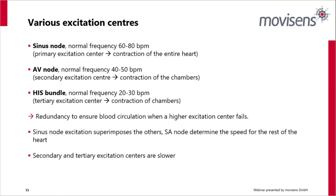There are various excitation centers within the heart. The sinus node is the primary excitation center with a normal frequency of 60 to 80 beats per minute, focused on contraction of the entire heart. The AV node is a secondary excitation center at 40 to 50 beats per minute, focused on contraction of the chambers. The HIS bundle is a tertiary excitation center at 20 to 30 beats per minute. There is redundancy in the system to ensure blood circulation when a higher excitation center fails. The sinus node excitation superimposes the others — the SA node determines the speed for the rest of the heart.